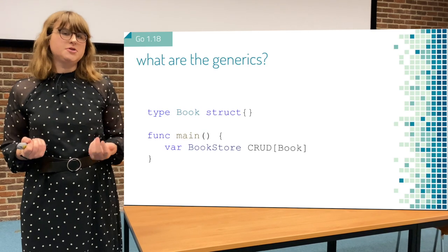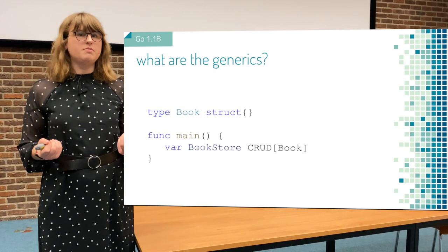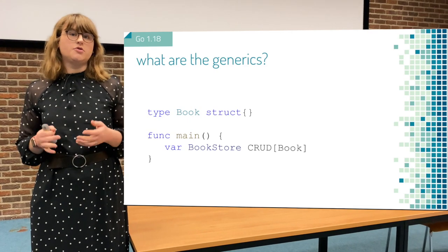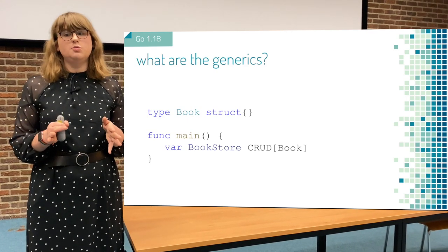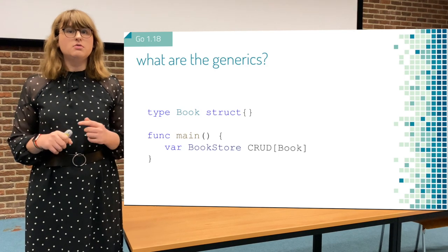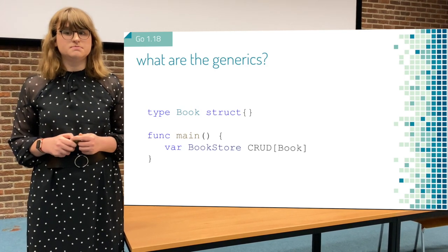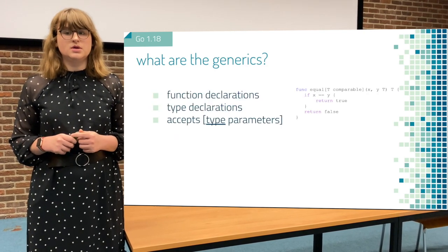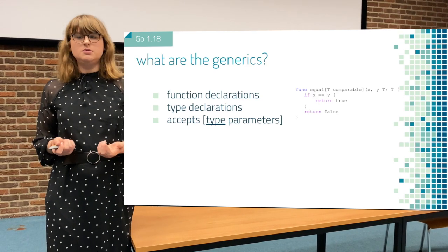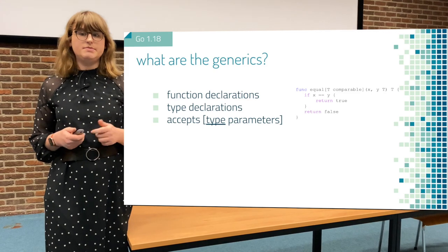Looking at a practical example, I have a struct book which I want to store in my bookstore. I'm just going to create our CRUD interface with the type book, which then makes our whole interface compatible with the book type instead of the generic type T. So where can we use these generics? You can use them in function declarations as well as type declarations, using square brackets to have type parameters.